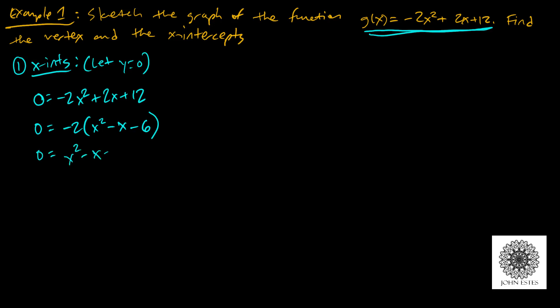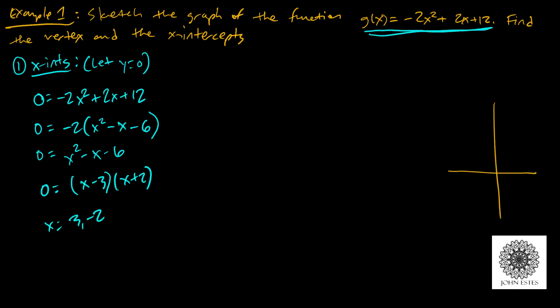Now we factor x² − x − 6. We need two numbers that multiply to −6 and add to −1: that's −3 and +2. So we get (x − 3)(x + 2) = 0, giving x-intercepts at x = 3 and x = −2. The graph crosses the x-axis at those two points.